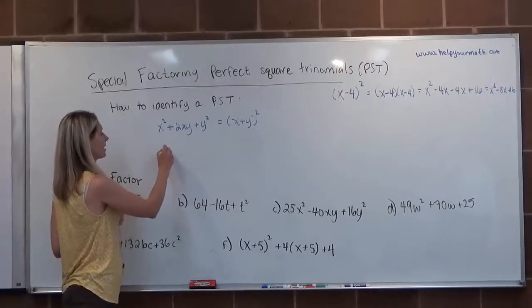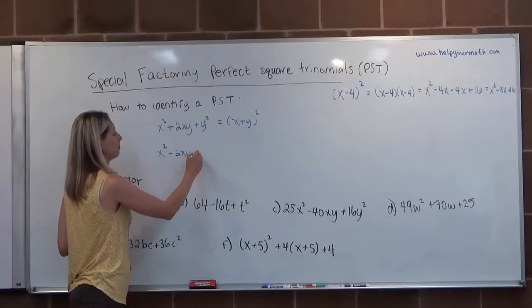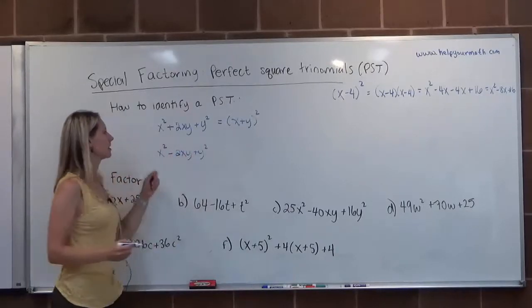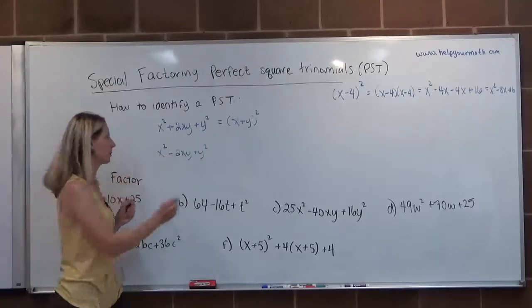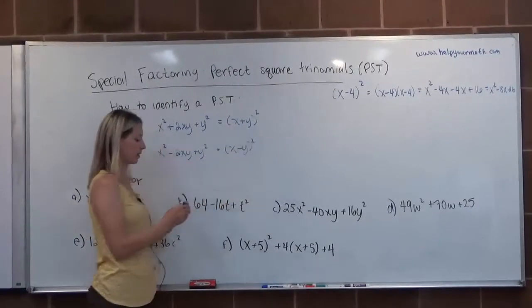That would be if we have x squared minus 2xy plus y squared. The difference here is that it changes the sign in the binomial. So that would be x minus y quantity squared.